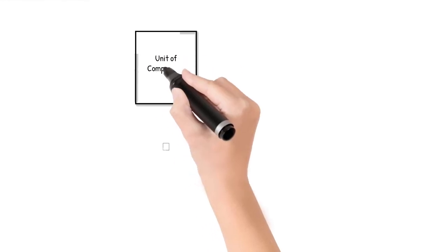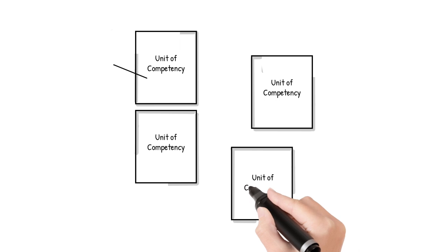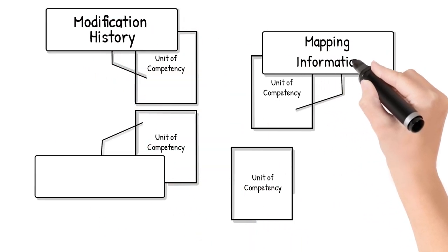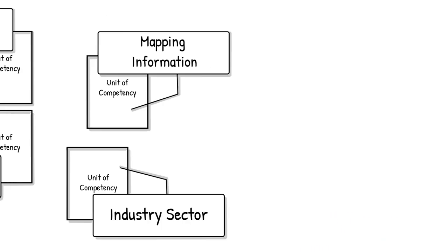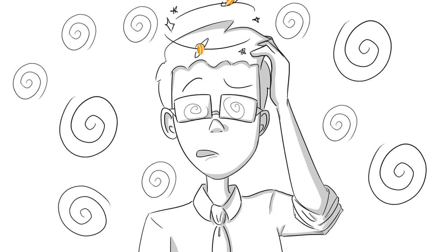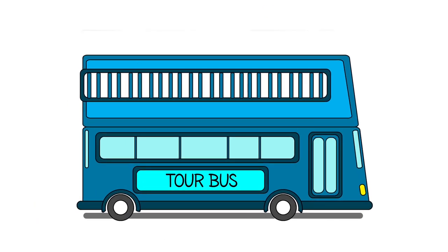They also contain administrative information such as modification history, mapping information, links and industry sector. Wow, that's complex. No wonder it takes time to get good at it. So, let's take a quick tour.